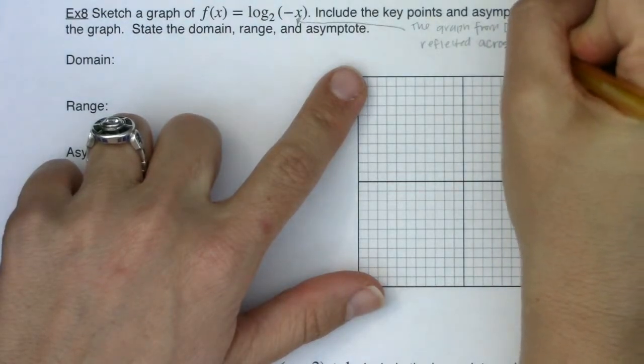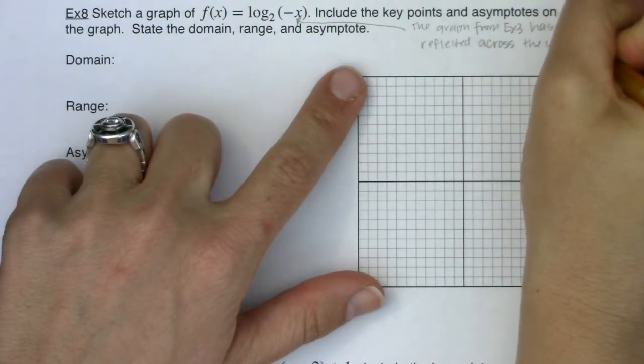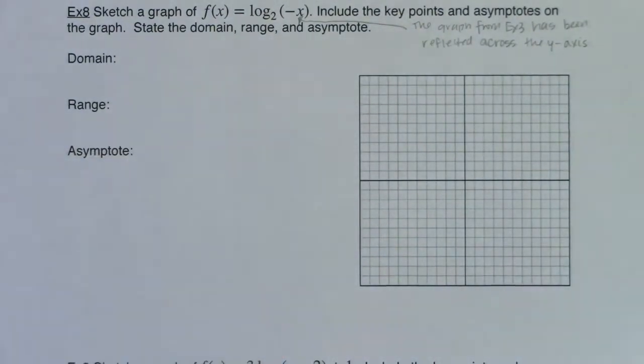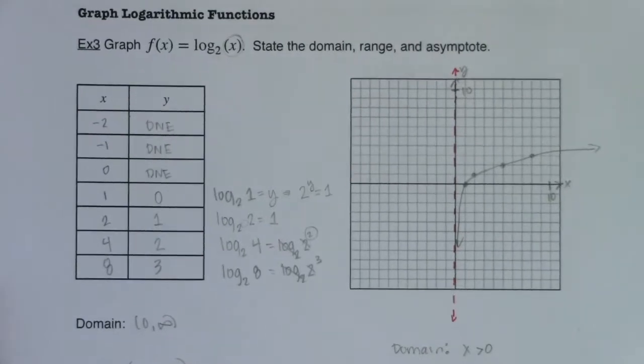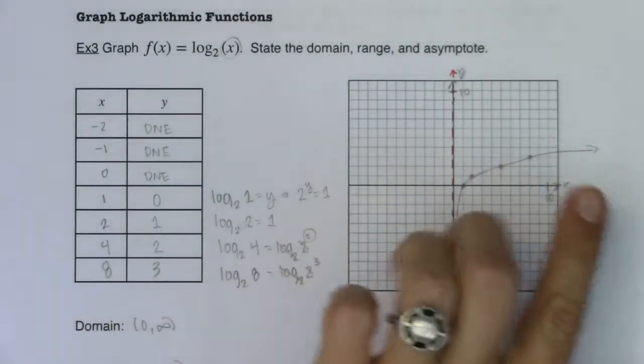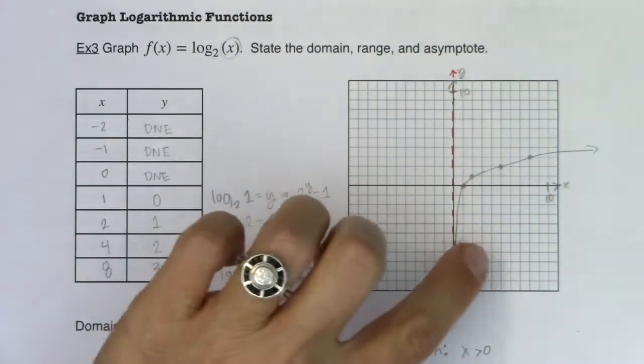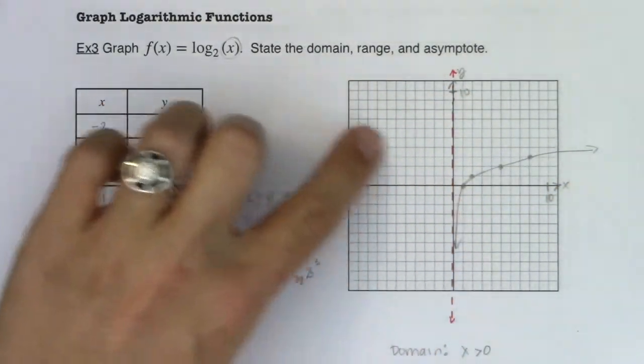Reflected across the y-axis. All right. So I want us to think about what that would look like. Imagine this graph from example 3. If I took a mirror and I flipped it over here, right? How does that reflect over the y-axis?